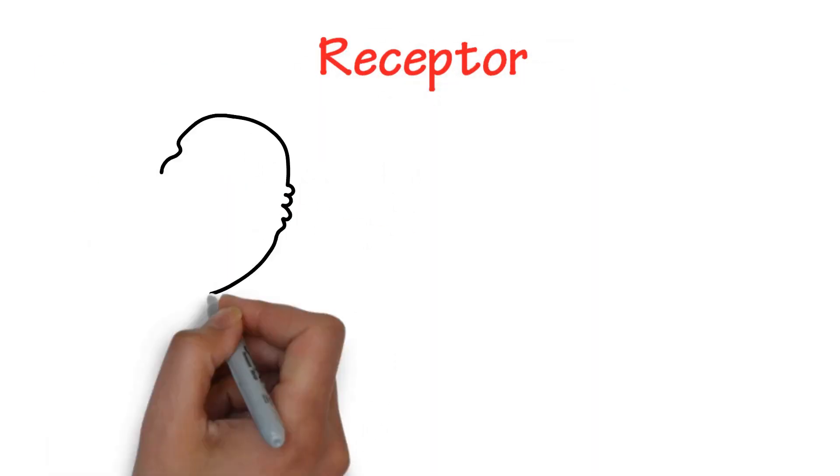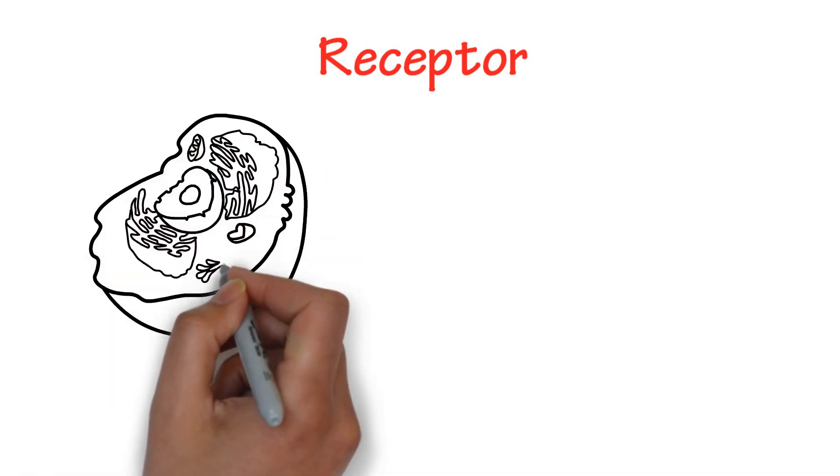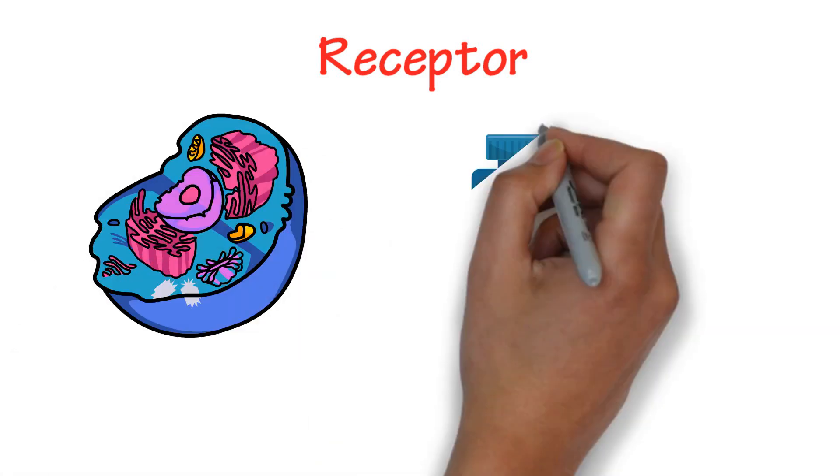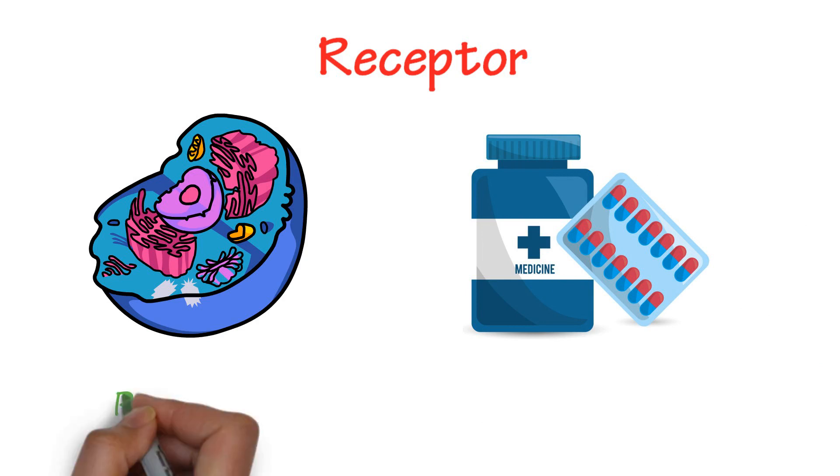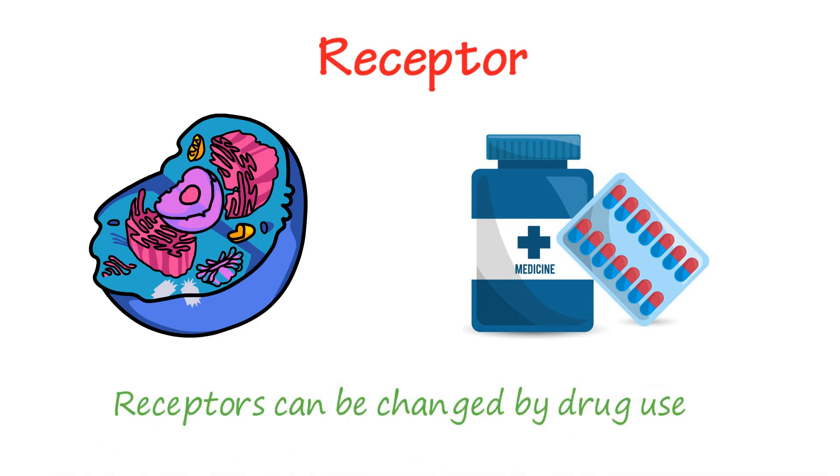Receptors are located on the surface of cell membranes and inside cells. The number of receptors available to interact with the drug will also directly influence the effect. Receptors can be changed by drug use.